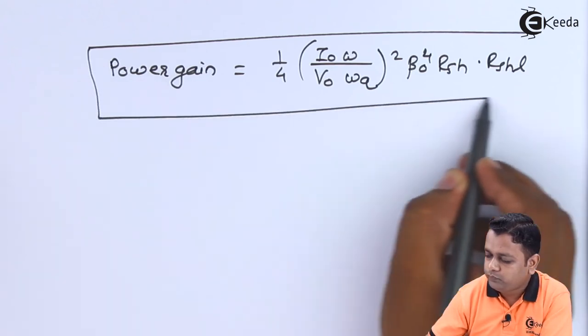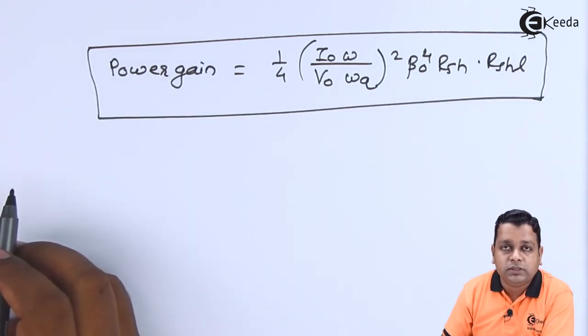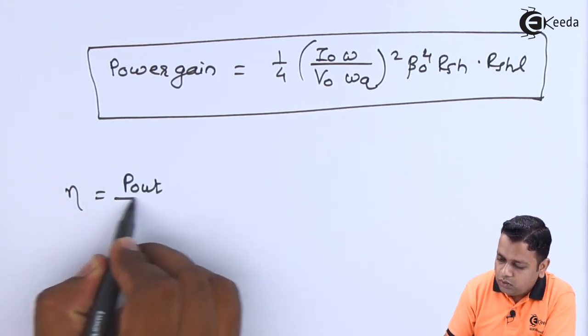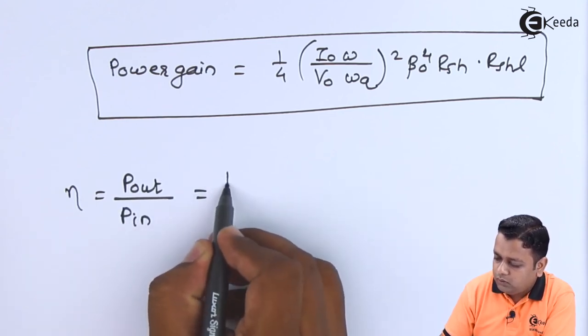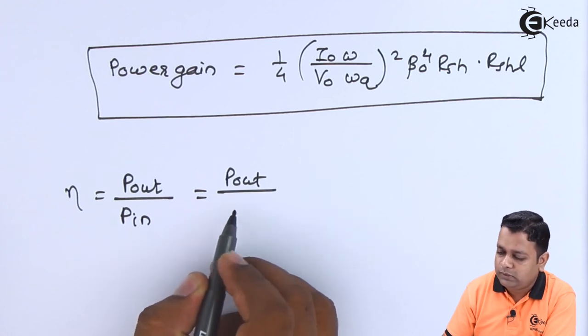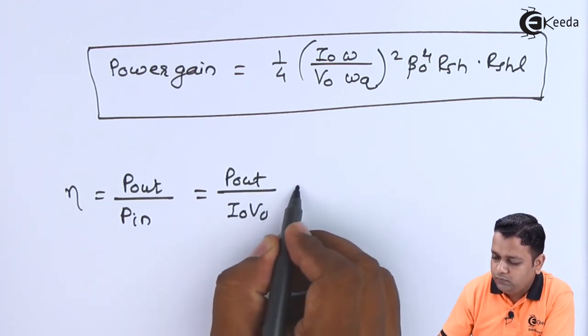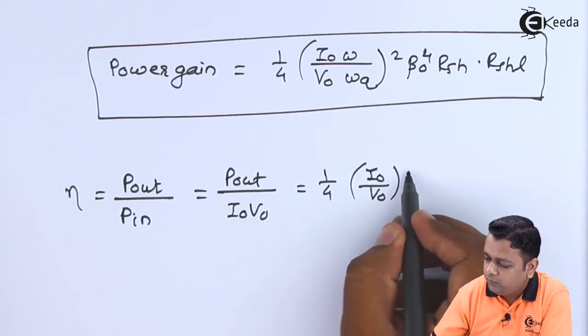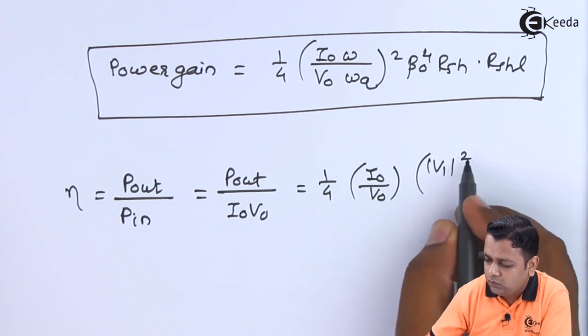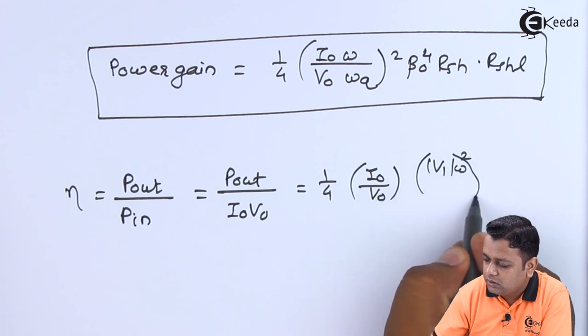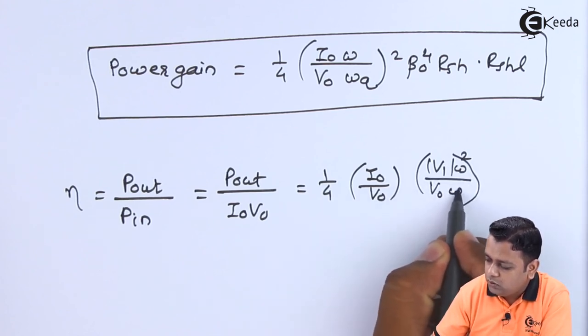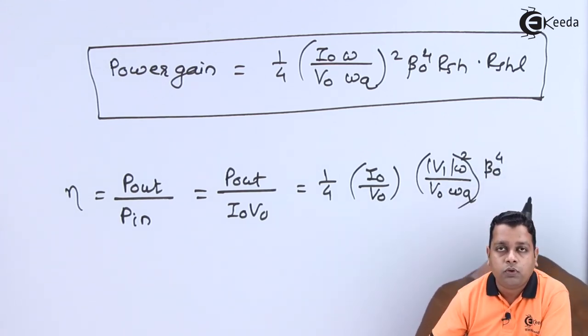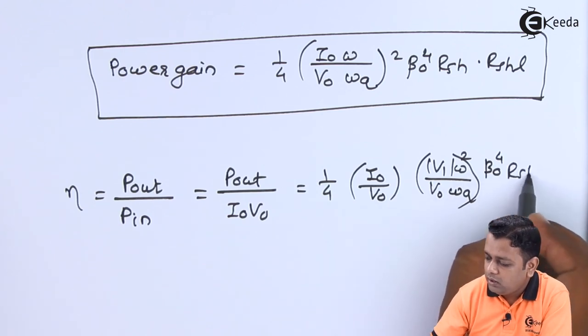Finally the efficiency can be denoted by eta and it will be P_out divided by P_in. P_out divided by P_in, we express in terms of I0 V0, it will be 1/4 I0 divided by V0 into mod of V1 squared, so square can also be given outside the bracket, divided by V0 into omega_Q. Outside the bracket it will be the 4th power of output beam coupling coefficient into R_SHL.